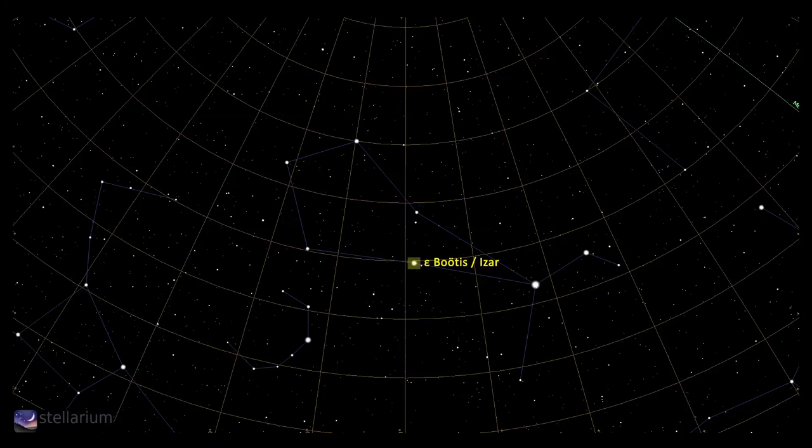The first is Epsilon Boötis, or Izar. This is a triple system with the primary being a yellowy-orange magnitude 2.5 giant star. The secondary is magnitude 4.6 and a blue main sequence star, while the tertiary is magnitude 12. The primary and secondary are separated by 2.9 arc seconds.